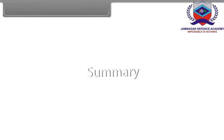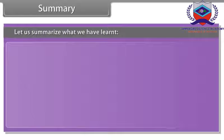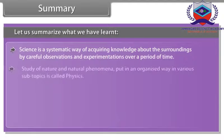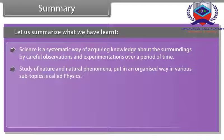Summary. Let us summarize what we have learnt. Science is a systematic way of acquiring knowledge about the surroundings by careful observations and experimentations over a period of time. Study of nature and natural phenomena put in an organized way in various subtopics is called physics.